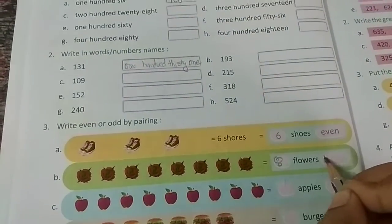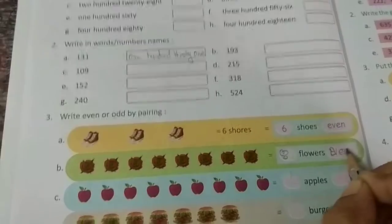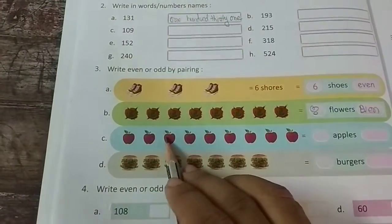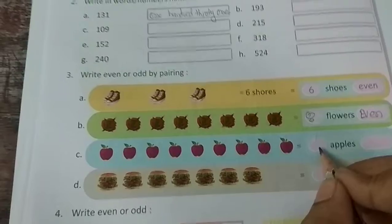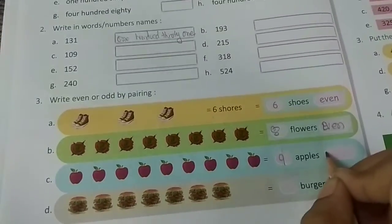How many are there? One, two, three, five, six, seven, eight, nine. Nine apples, so what are odd?